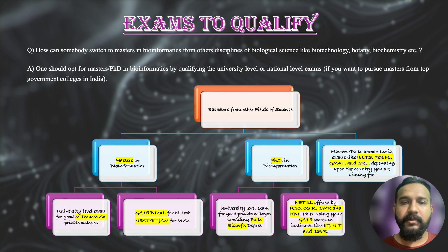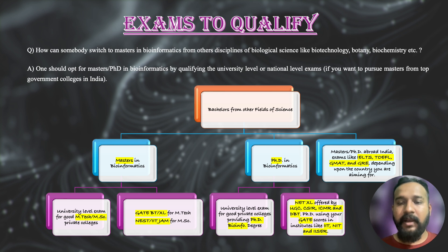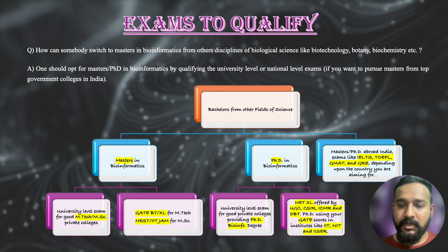Before discussing the exams, we should address a frequently asked question: how can someone switch to a Master's or PhD in bioinformatics from different fields of life sciences — such as biotechnology, botany, biochemistry, or genomics? To pursue a Master's or PhD in bioinformatics from good colleges, you must qualify national level exams, which we will discuss in this slide.